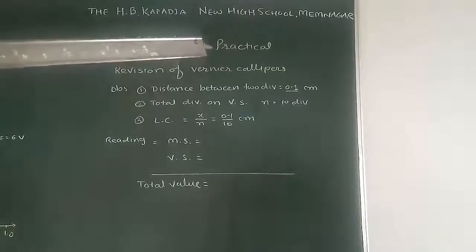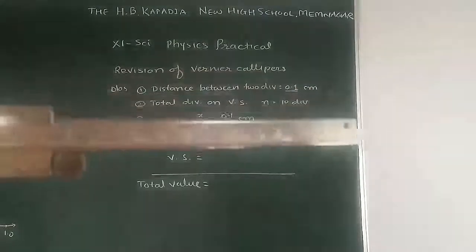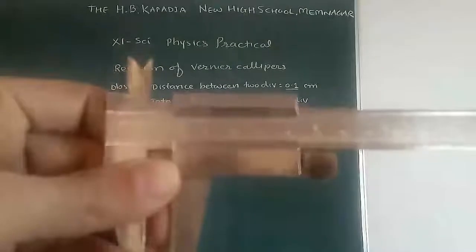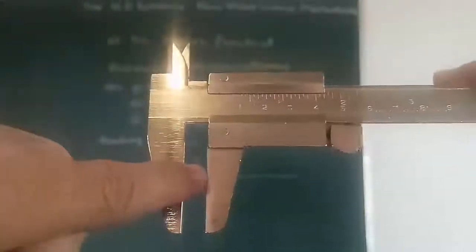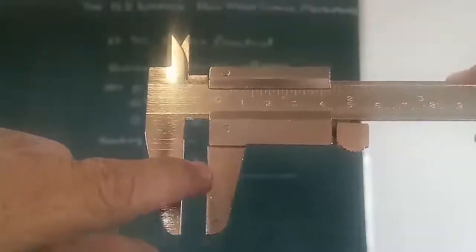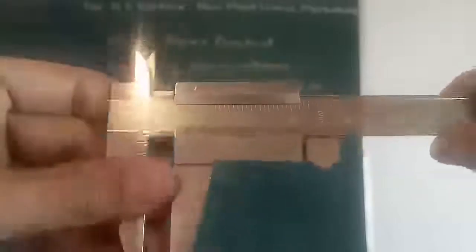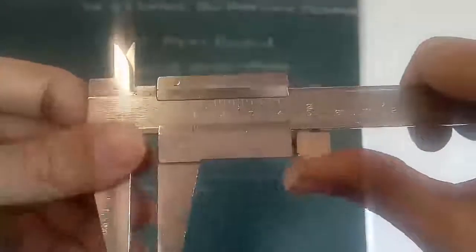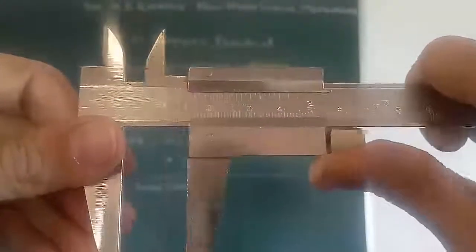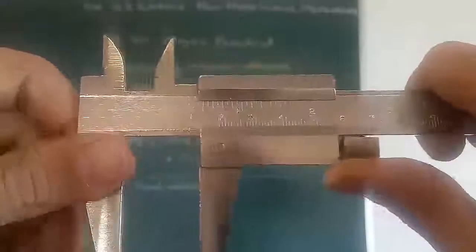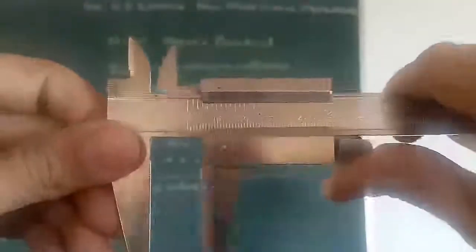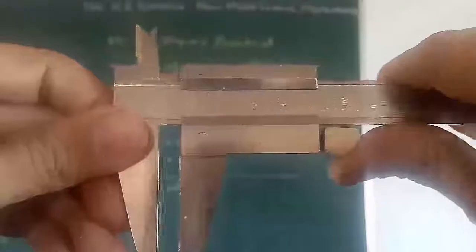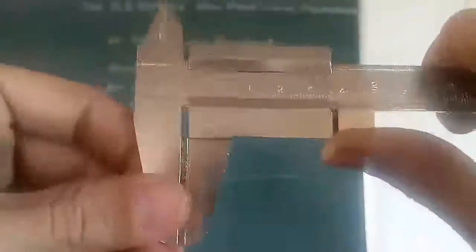Now, how to observe the reading? This is the instrument. This part is used to find the distance between the outer dimension of any object. You can operate it by moving it here. This is the main scale and Vernier scale. When you close it, there is no distance between the main part and the Vernier part.